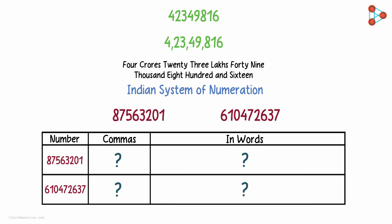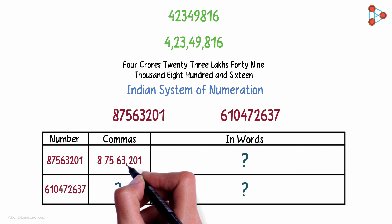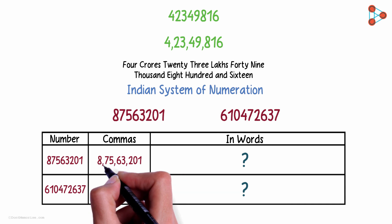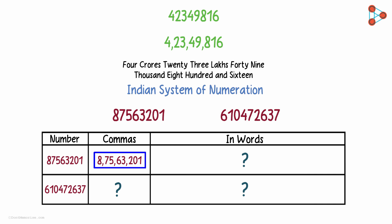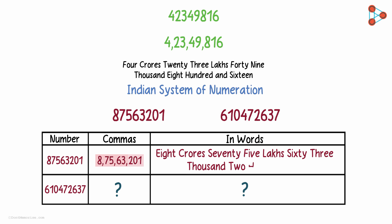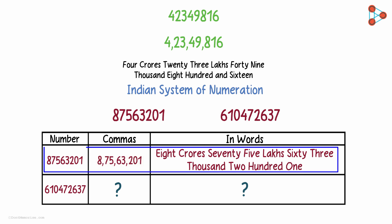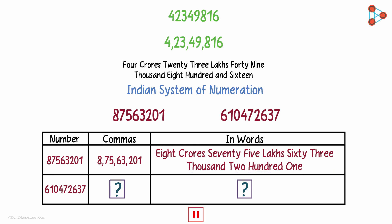Let me help you with the first one. Let's copy the number without the commas in the second column first. First comma 3 digits from the right, then 2 digits, and then 2 digits again. This is how the number will look with commas, and this will easily help us write the number in words — it will be 8 crores 75,63,201. Now using the same concept, I want you to fill the remaining 2 cells of the table. And this is what you should get.